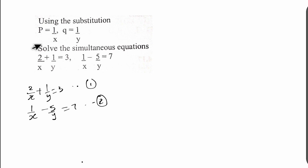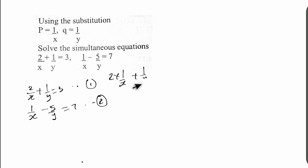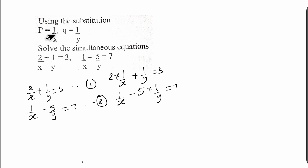Since we are given that p = 1/x and q = 1/y, we can apply the substitution here. Wherever we see 1/x, we replace it with p, and wherever we see 1/y, we replace it with q. So for equation one, we can express it as 2 multiplied by (1/x) plus 1/y = 3, and for equation two, we have 1/x minus 5 times (1/y) = 7.